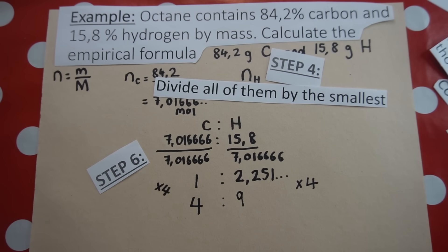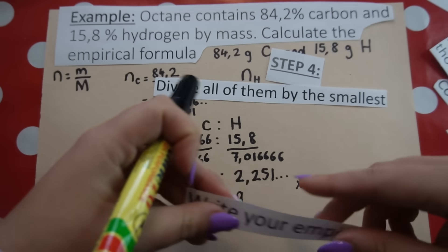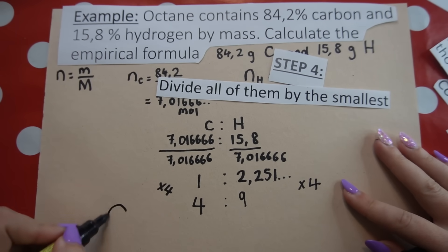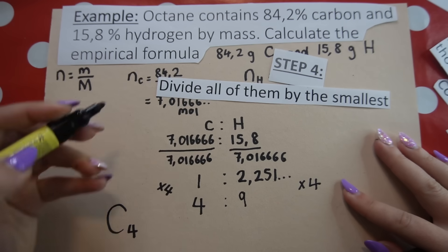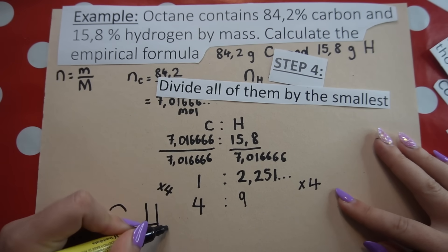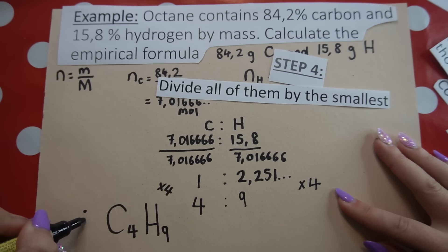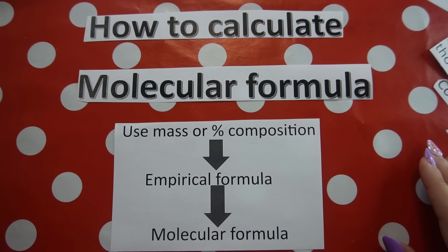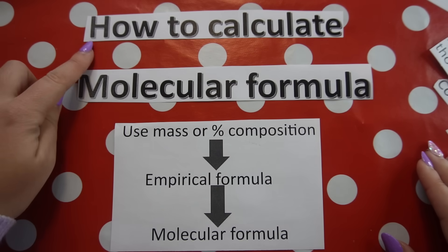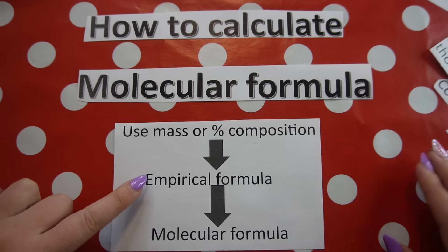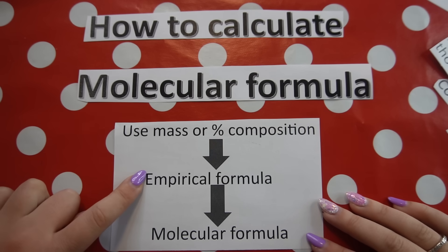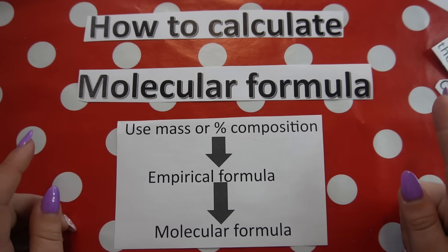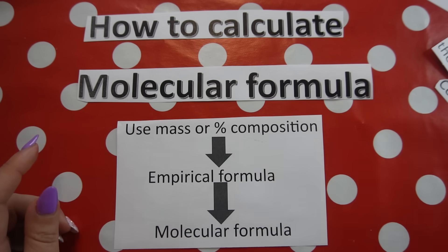Step six: now that we have whole numbers — 4 carbons and 9 hydrogens — we can write the empirical formula: C₄H₉. So the empirical formula for octane is C₄H₉. In the next video we'll look at how to calculate the molecular formula given the empirical formula and the molar mass, so subscribe and keep notifications on.